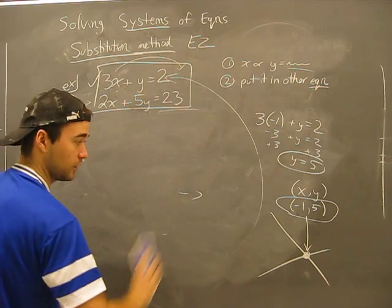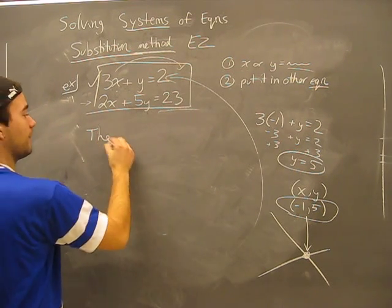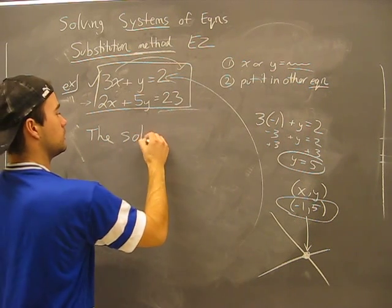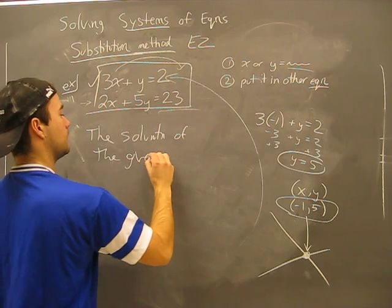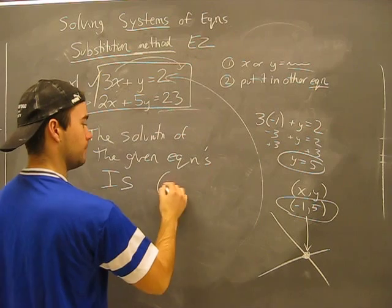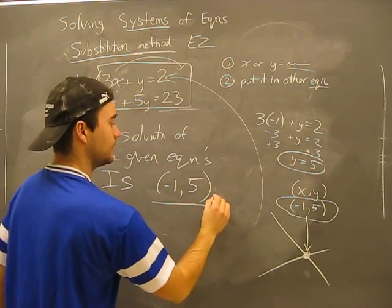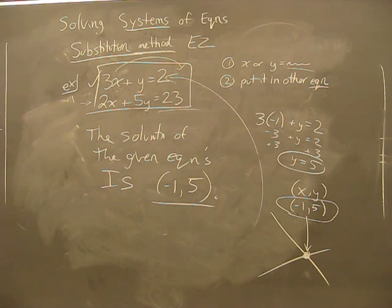So of course this is all the work you're going to show on your exams and homework. You're going to end up with your final statement for full marks. The solution of the given equations is minus one and five. Ta da. I'm so happy you're learning this from me.